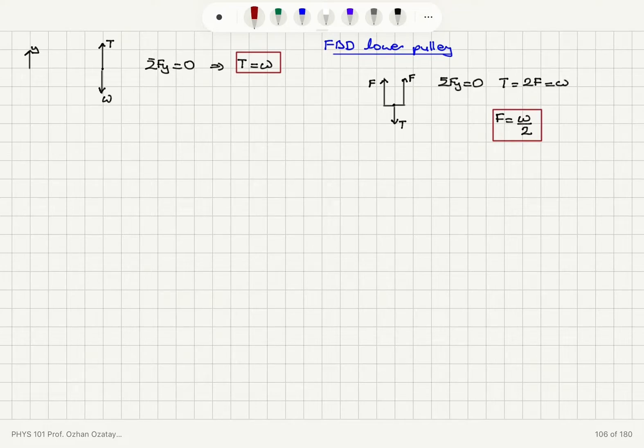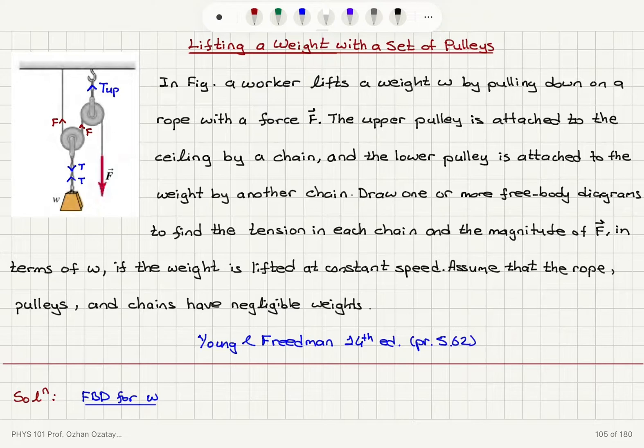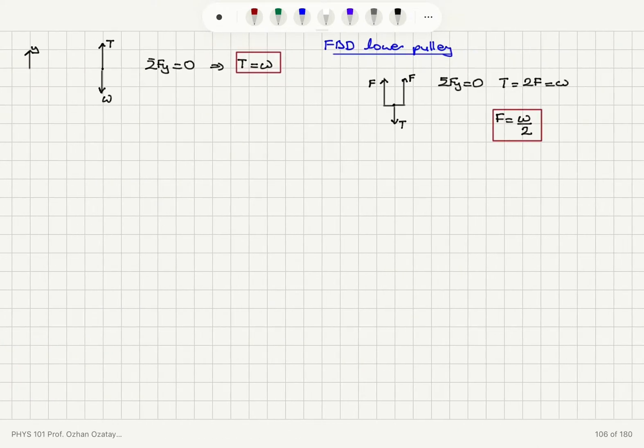Now, why is this the same force F acting on these strings? Because they are all the rope, the pulleys, chains—they have all negligible weights. Okay, so we can note that here: note that the tension in the rope must be equal to F everywhere since the rope and pulleys have negligible mass.